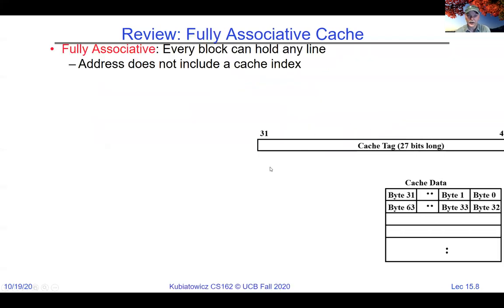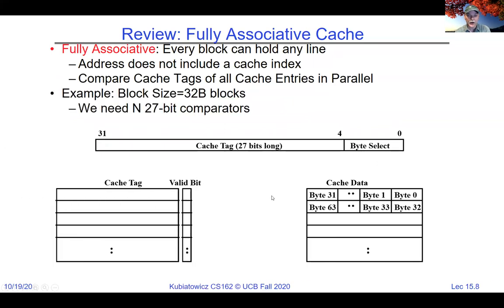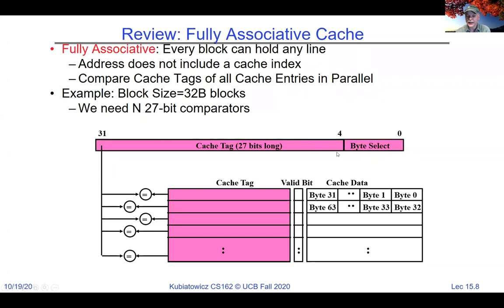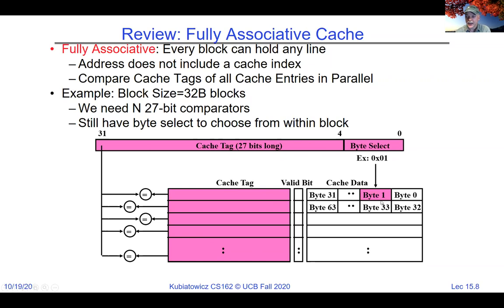We can keep shrinking the index until we have zero index bits — that's called fully associative. In a fully associative cache with 32 blocks, all entries have a tag and are all checked in parallel. The tag is now 27 bits because we've eliminated the index entirely, and we compare against all tags and pick the matching one. Think of this as the extreme case of set-associative where there's one complete set encompassing the whole cache.